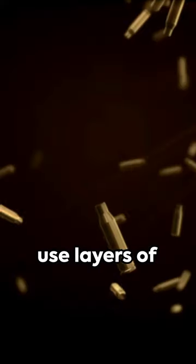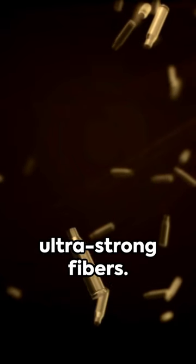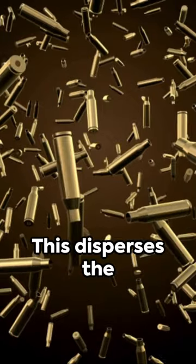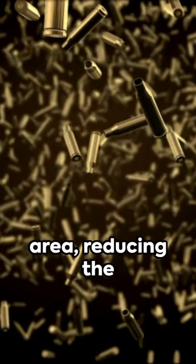Bulletproof jackets or ballistic vests use layers of ultra-strong fibers. These fibers absorb the bullet's energy by stretching upon impact. This disperses the energy over a larger area, reducing the bullet's impact.